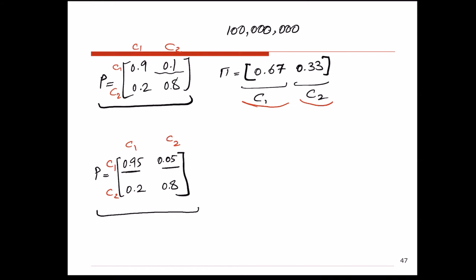To answer this question, we need to find the steady-state probabilities under this new setting — specifically, in the long run, what is the chance that a randomly picked person is a cola 1 drinker versus cola 2 drinker. The values of pi 1 and pi 2 will tell us the market share of cola 1 and cola 2. Then we can assess whether the change in market share brings enough profit to justify the $500 million advertising cost.